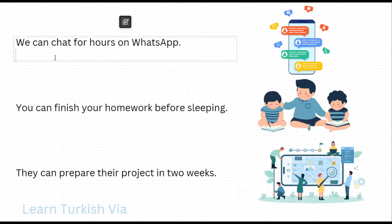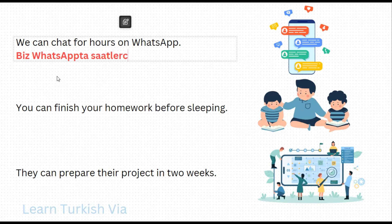We can chat for hours on WhatsApp. Let's write. We – biz, WhatsApp – WhatsApp'ta. For hours – hour is saat, hours – saatler, saatlerce. Chat – sohbet et. Can chat – sohbet edebil, simple present tense – edebilir, we can chat – sohbet edebiliriz. So 'we can chat for hours on WhatsApp' is 'Biz WhatsApp'ta saatlerce sohbet edebiliriz.'